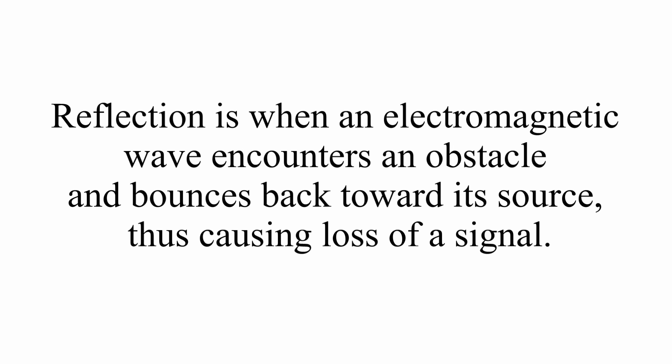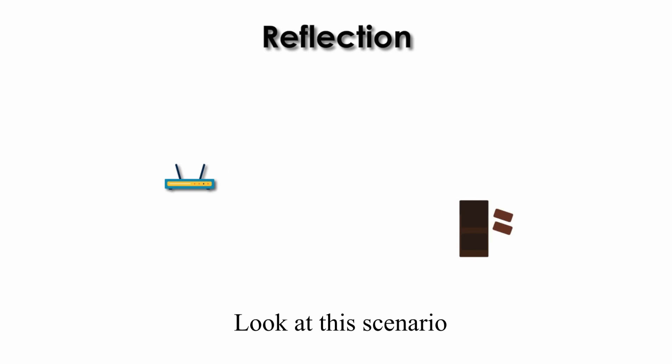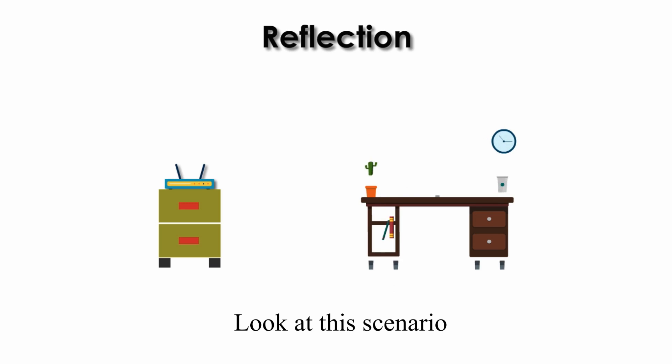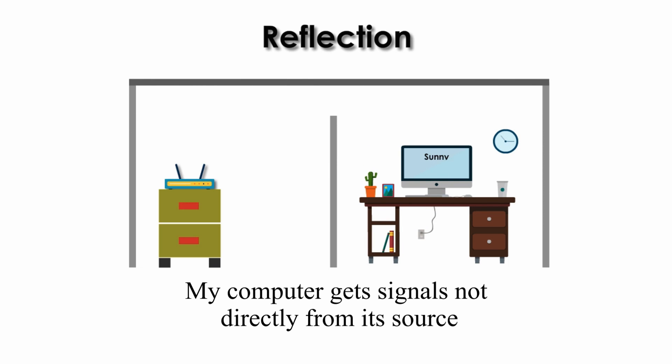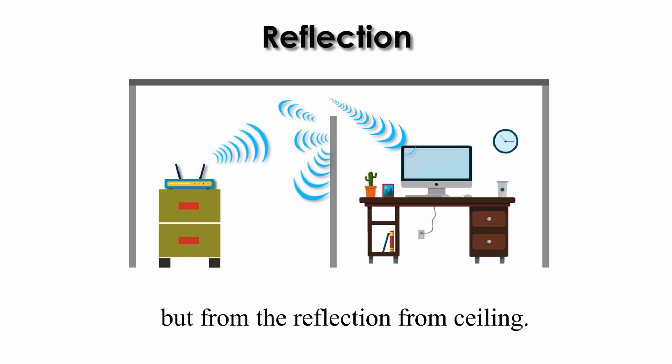Reflection. Reflection is when an electromagnetic wave encounters an obstacle and bounces back towards its source, thus causing loss of signal. Look at this scenario. My computer gets signal not directly from its source, but from reflection from the ceiling.